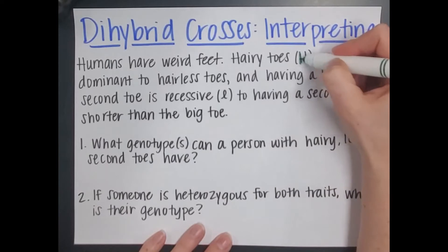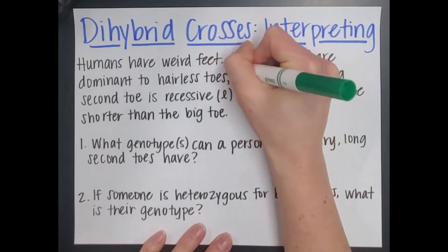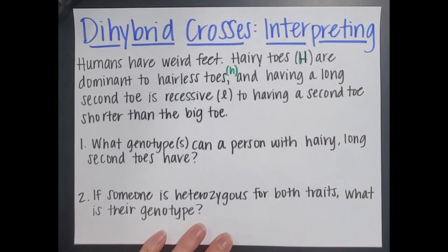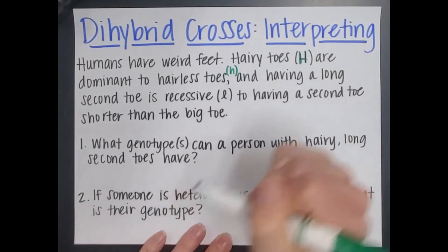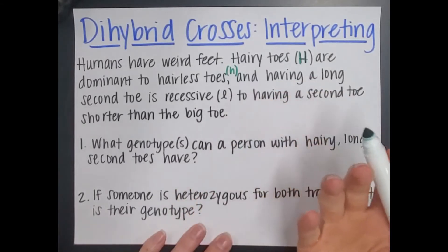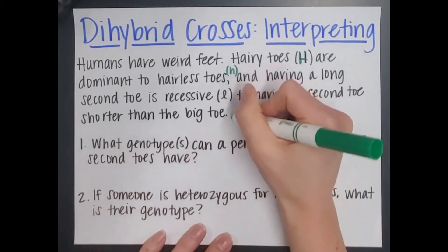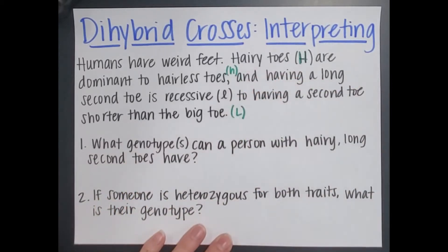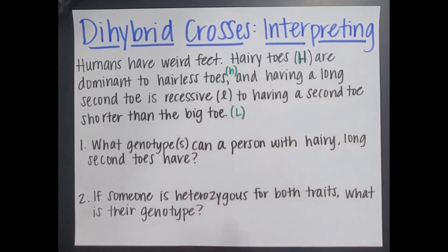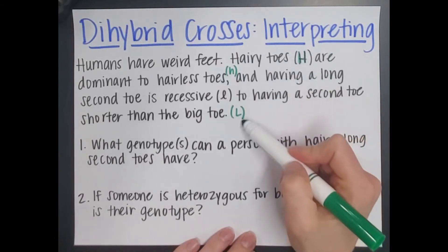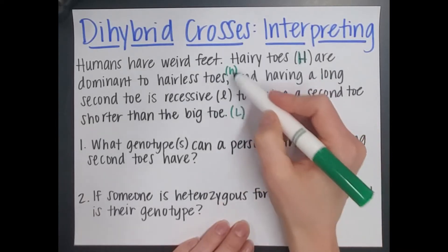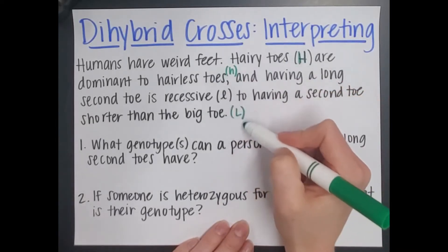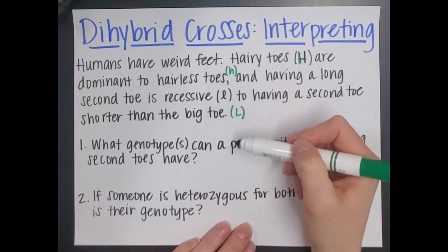Hairy toes are dominant, so they are big H. That means hairless toes are going to be little h because they're recessive. Having a long second toe is recessive, so that's a lowercase l — I always do a little loopy L to help me remember it's lowercase. Having a second toe shorter than the big toe is dominant, so that gets a capital L. Make sure your letters are completely different looking from each other so you can tell upper from lowercase apart.